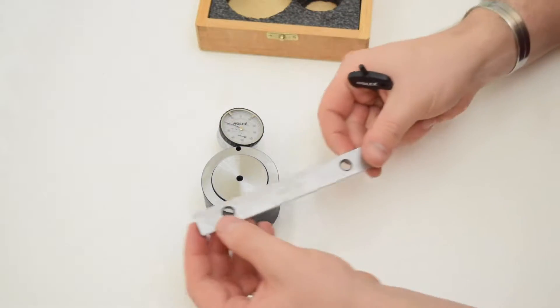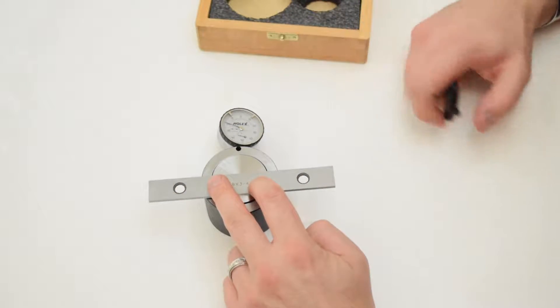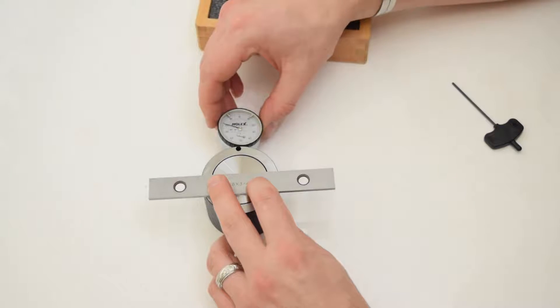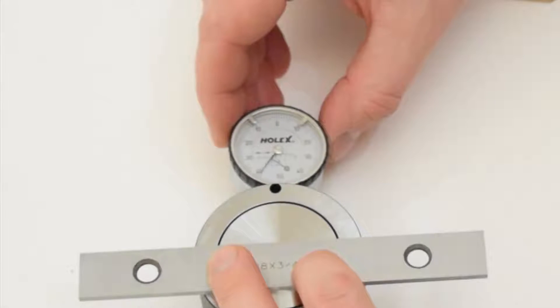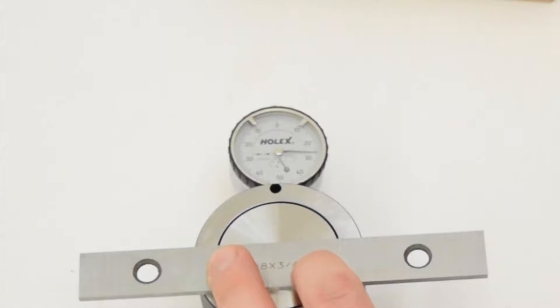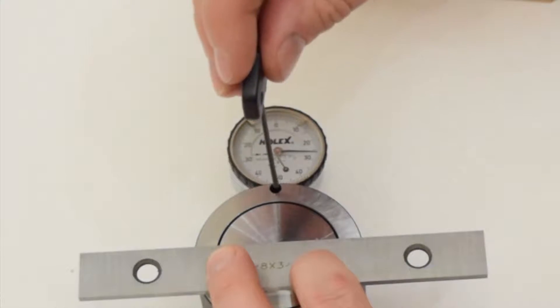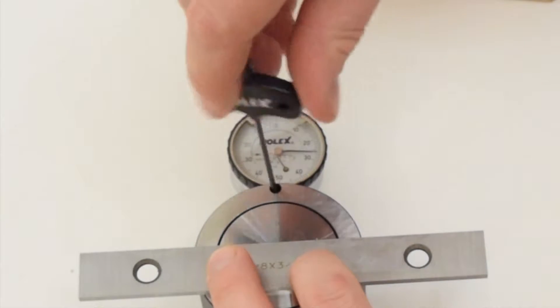Now with a parallel we force the spring loaded table down until it rests on the housing and now I can adjust the dial indicator until it reads 0 minus 25 and lock the tool in position.